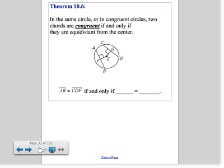In other words, chord AB is congruent to chord CD - not CDF, so make sure you cross that out. Those two chords are congruent if and only if the distance from E to F is the same as the distance from E to G.